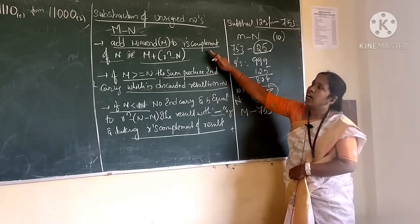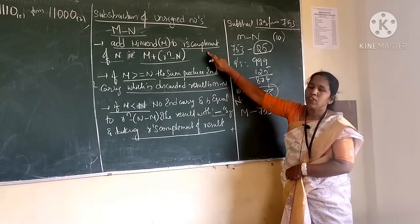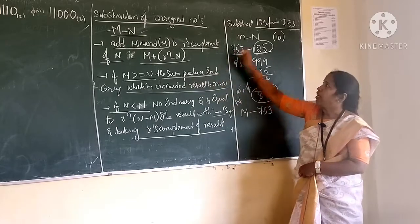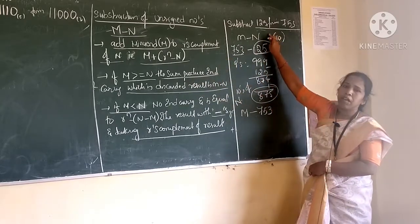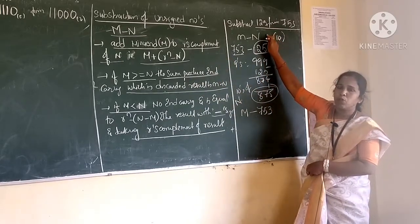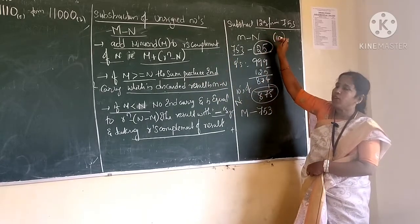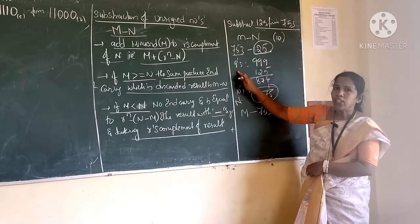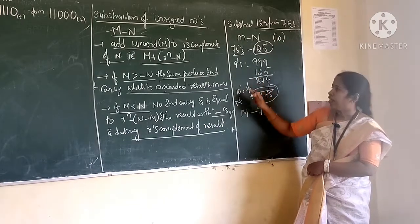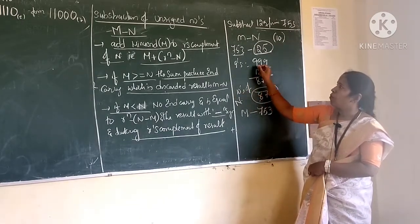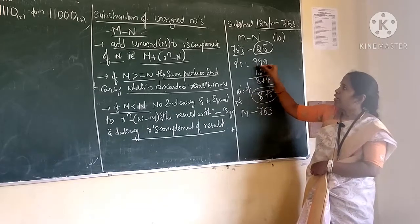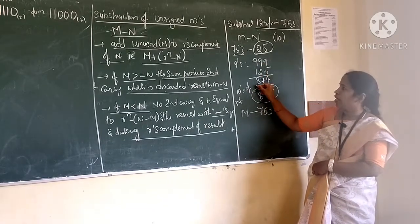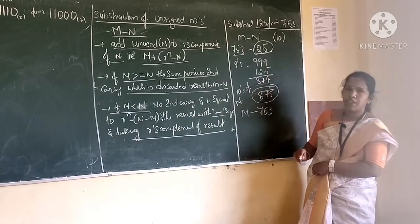First step is: m should be added with r's complement of n. Here, the number system given is decimal, so we need the 10's complement of n. First I should find out the 9's complement, then add 1. The 9's complement is obtained by subtracting each digit of a number from 9. So you are getting 874.